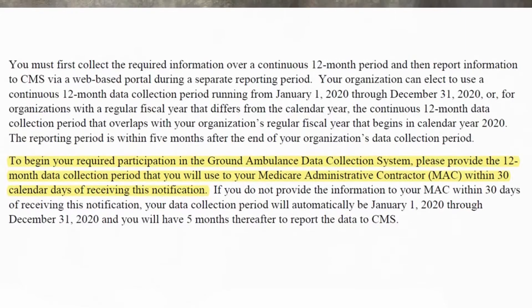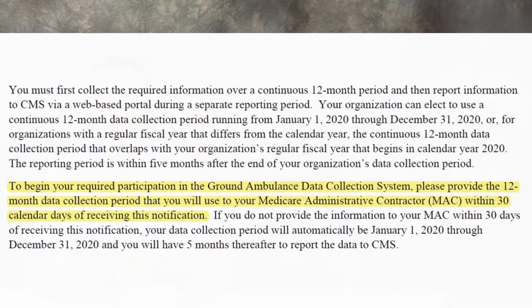In many cases, those letters have already gone out. In those letters, your MAC will give you a deadline and a website or email address at which you are required to report your 12-month intended period. You may need to do that within 30 days of the date of the letter, but check that letter carefully on how much time you have and where that report must be made. That very likely needs to be done before January 1st if you've been selected.